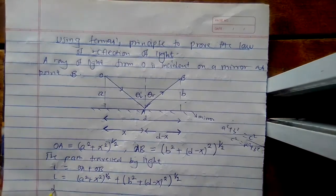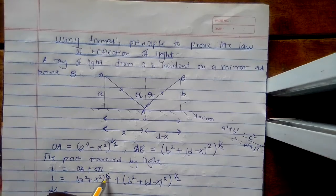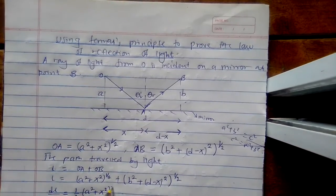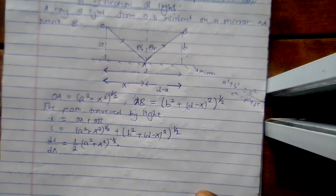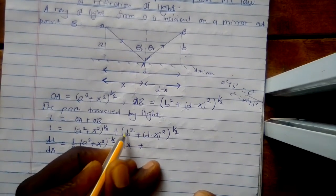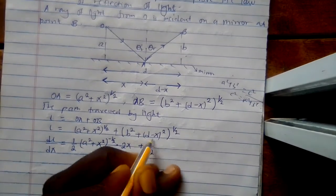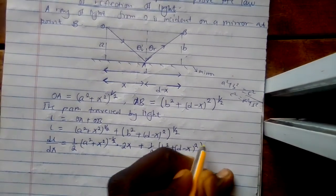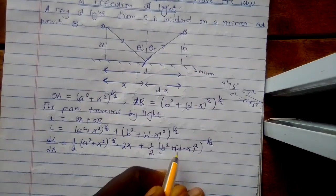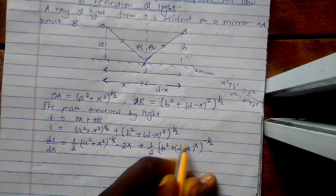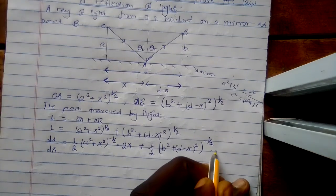Let us try to get dL/dx. I'll drop the power, giving a half times (a² + x²)^(−1/2) times the derivative of the inside, which is 2x, plus a half times (b² + (D minus x)²)^(−1/2) times the derivative of (b² + (D minus x)²) with respect to x. Since b² is independent of x, I need to differentiate (D minus x)².